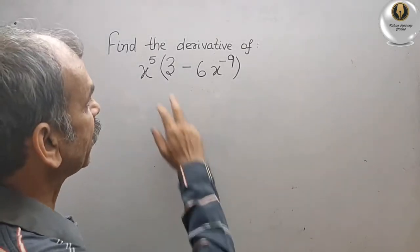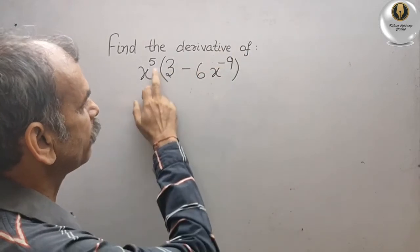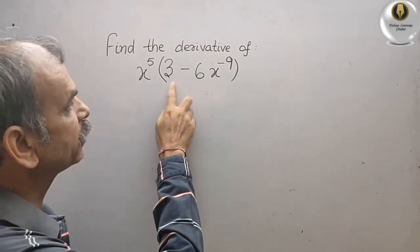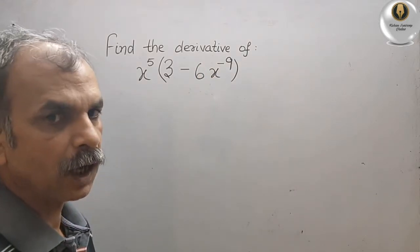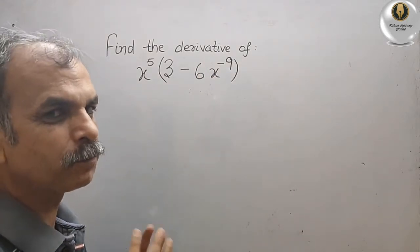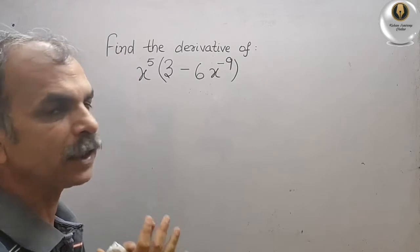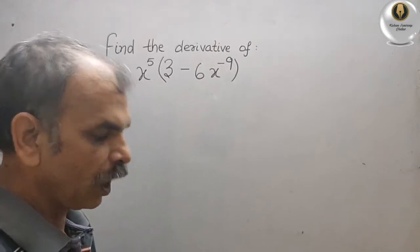Your question is find the derivative of x to the power of 5 in bracket, they have given 3 minus 6x to the power of minus 9. Now this type of question you can solve in two ways.